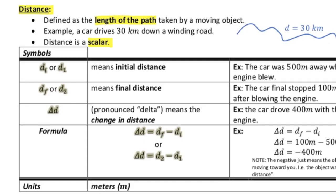So when we look at our symbols, D subscript I or D subscript 1 means our initial distance. D subscript F or D2 means our final distance.